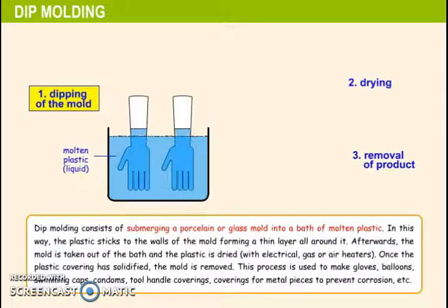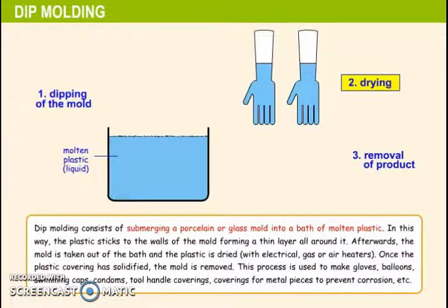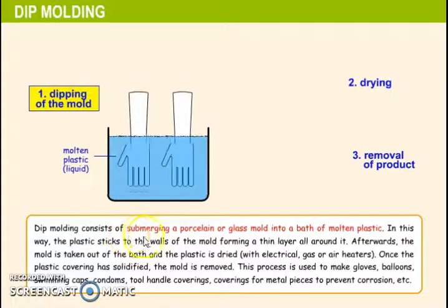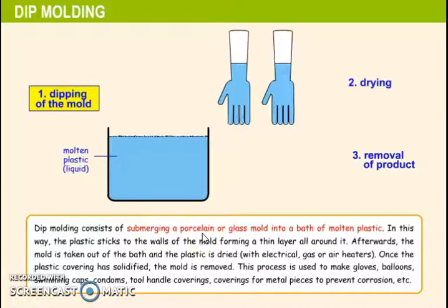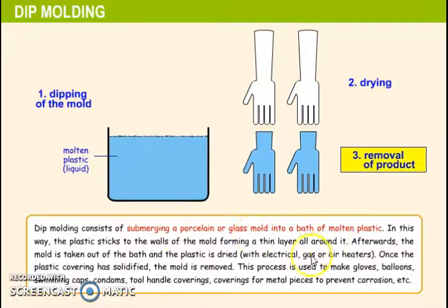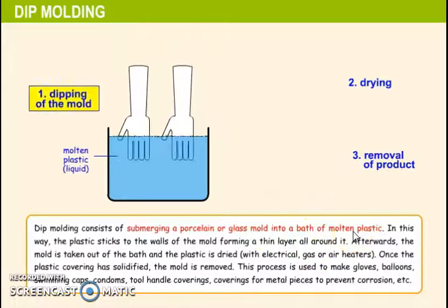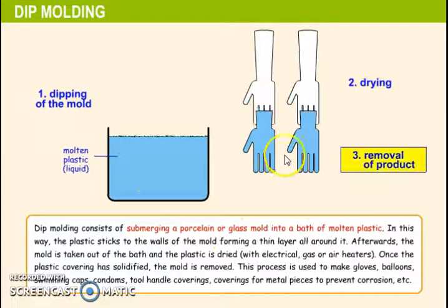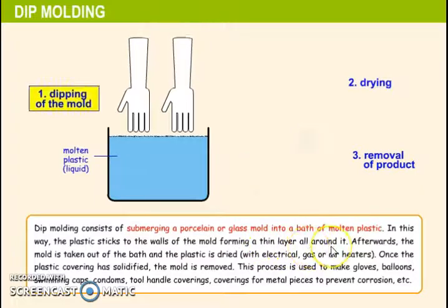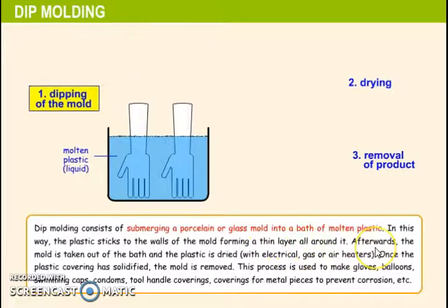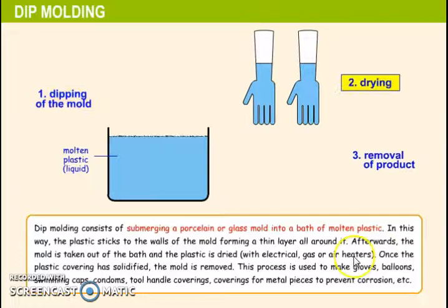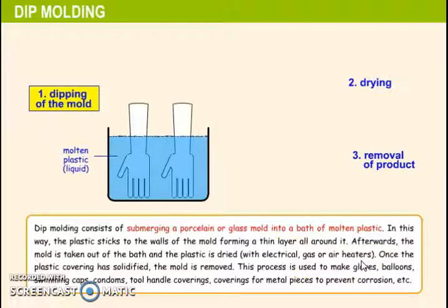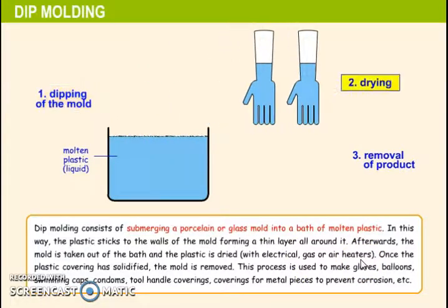Next, and the last one: deep molding. Deep molding consists of submerging a porcelain or glass mold into a bath of molten plastic. In this way, the plastic sticks to the walls of the mold, forming a thin layer all around it. Afterwards, the mold is taken out of the bath and the plastic is dried with electrical gas or air heaters. Once the plastic covering has solidified, the mold is removed.